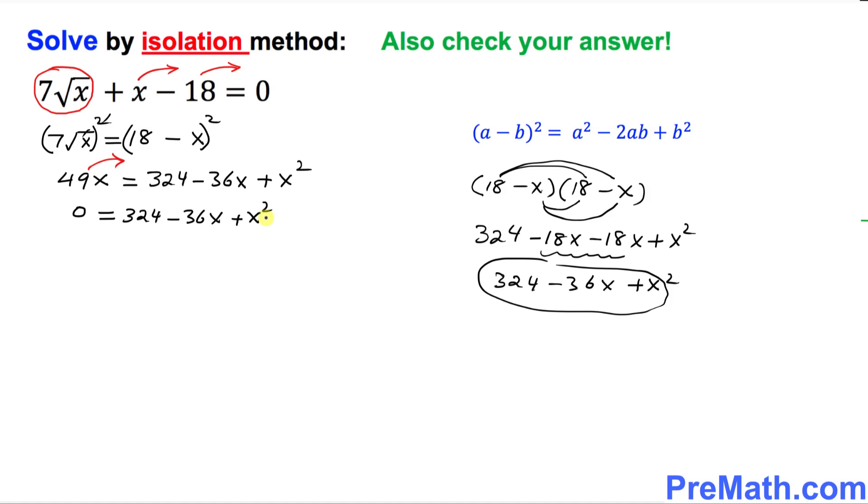And this positive 49 become negative 49x. Let's combine these like terms. And we put it in our descending order as well. I can write down x square minus 85x when you combine negative 36 and negative 49 and then plus 324. And instead of putting a zero on the left-hand side, I can put it on the right-hand side. And now this represents a quadratic equation. So we can go ahead and we can easily factor it out.